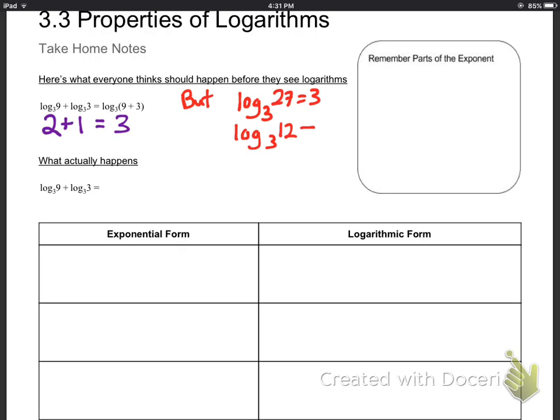But we have a problem. Log base 3 of 27 is 3, not log base 3 of 12. In fact, log base 3 of 12, that's probably some ugly decimal that keeps going on and on. So I want to point out right away this is not the way that logs work. You might have some recollection of that from before. What actually happens is that log base 3 of 9 plus log base 3 of 3, that's 2 plus 1 equals 3, that must become log base 3 of 27, which happens to be 9 times 3. So that looks really strange that adding on the outside becomes multiplication on the inside.